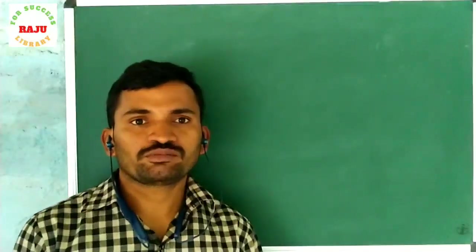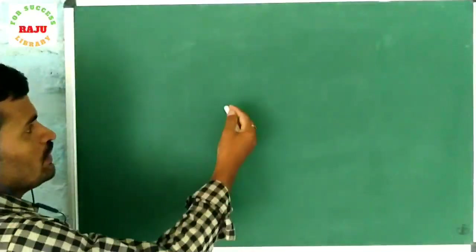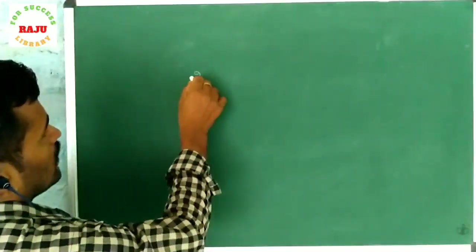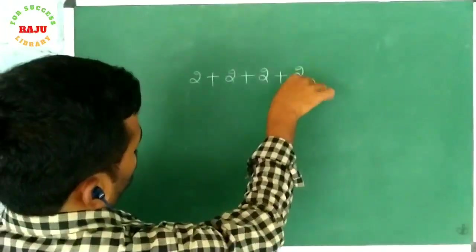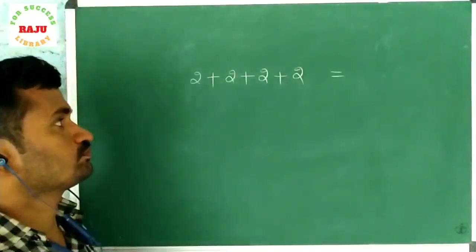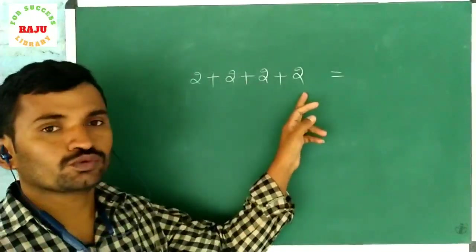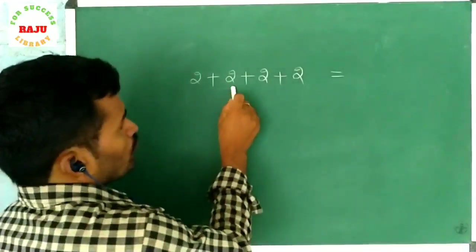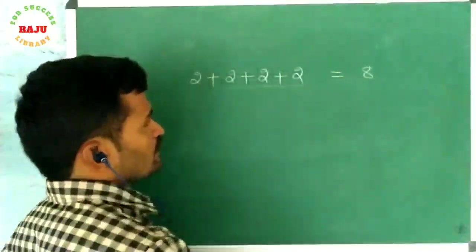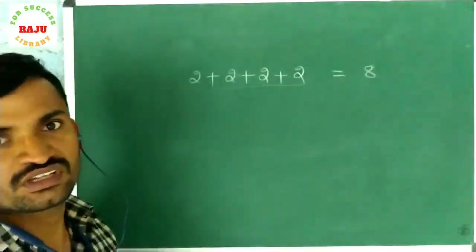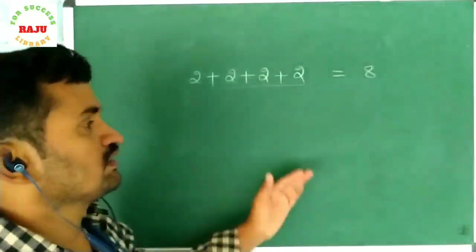Hi children, welcome to Raza Library. Here I am going to write one thing — you observe this one. What is the answer for this one? 2 plus 2 plus 2 plus 2. What is the answer? 2 plus 2 is 4, 4 plus 2 is 6, 6 plus 2 is 8. So the answer is 8.